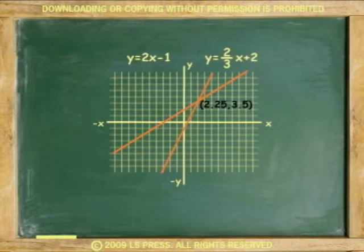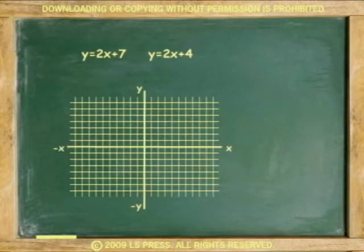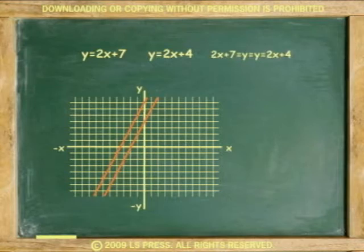Any system of equations can be solved by substitution. Another example: solve the system by substitution. y equals 2x plus 7, y equals 2x plus 4. Because y equals y, substitute. 2x plus 7 equals 2x plus 4.